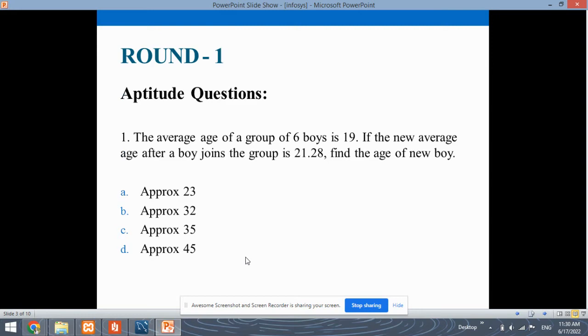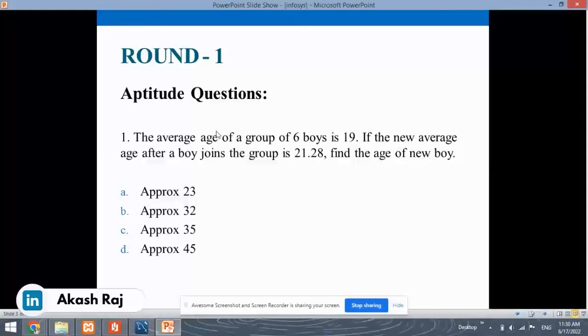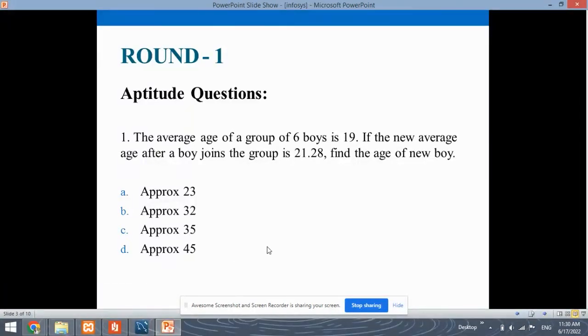This is the first aptitude question. It is of the quantitative aptitude type. The question says, the average age of a group of six boys is 19. If the new average age after a boy joins is 21.28, find the age of the new boy. So, which means there was a group of six boys and the average of their ages was 19. But then, a new boy joined in this group and after he joins, the average of the ages becomes 21.28. You need to find the age of the new boy. There are four options given. You can solve this question and select any of those.